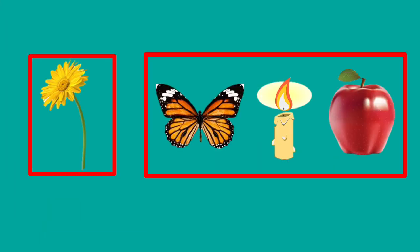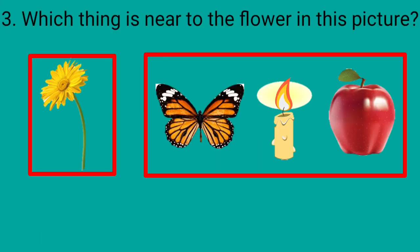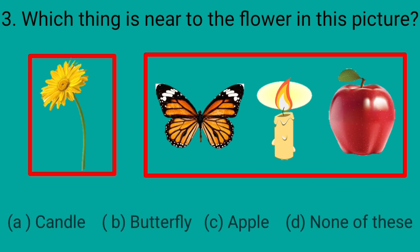Our third question is, which thing is near to the flower in this picture? Option A is a candle. Option B is a butterfly. Option C is an apple. And option D is none of these.